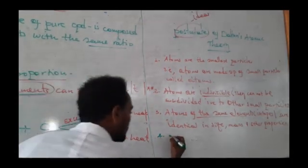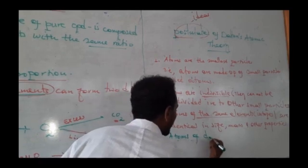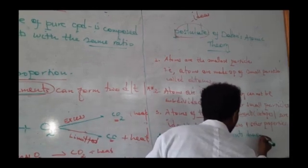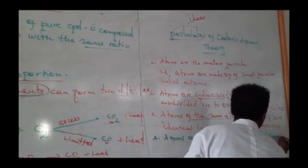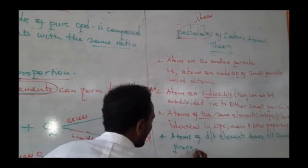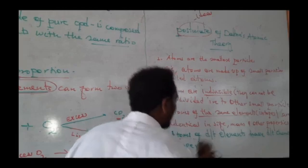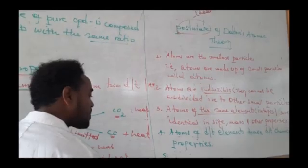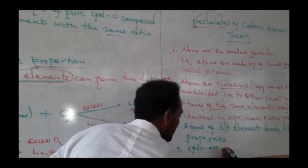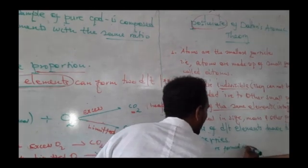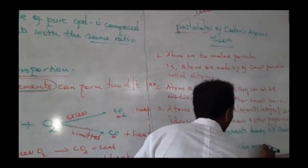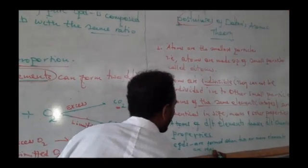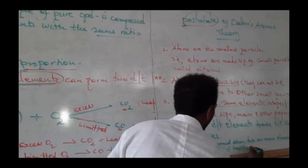Atoms of different elements have different chemical properties. Compounds are formed when two or more elements are reacted together.